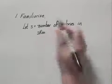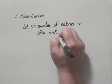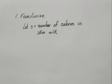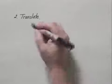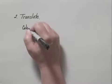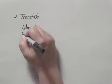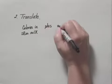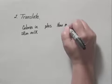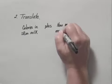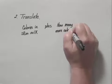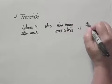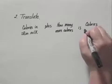So we will let S equal the number of calories in an 8-ounce serving of skim milk. It's important to write down what these variables stand for, and the more complicated the problem is, the more important this step is. The second step is to translate. To do that, I'll reword what was said in English and then translate that to math. We can start by thinking: the calories in skim milk, plus how many more calories there were in whole milk, is the number of calories in whole milk.